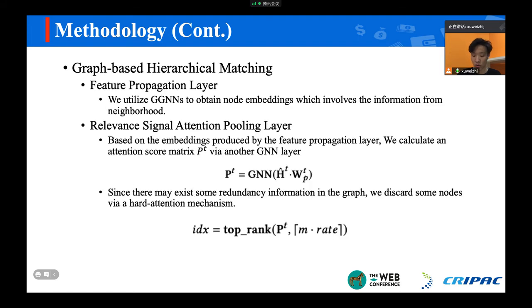For graph-based hierarchical matching, there are two main components. We first apply GCNNs to propagate node features to their neighbors. Then we utilize another one-layer GCN model to produce the attention score matrix for each node, inspired by the work named SAGPool in the domain of graph pooling.